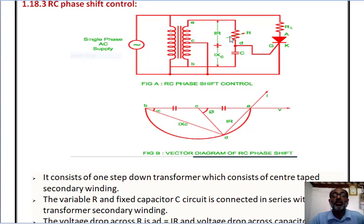As shown in this figure, one variable resistance R and one fixed capacitor C is connected in series. That means it becomes an RC series circuit. This series combination is connected to the secondary winding of the transformer between terminals A and B.